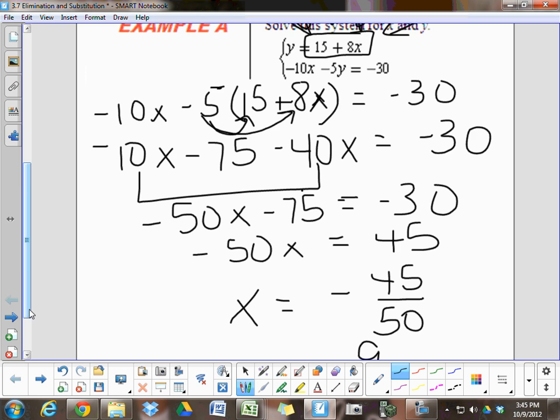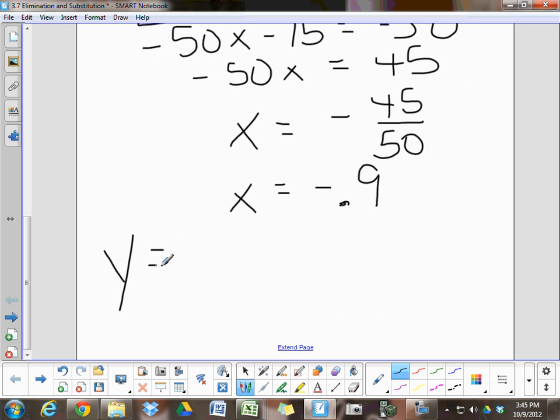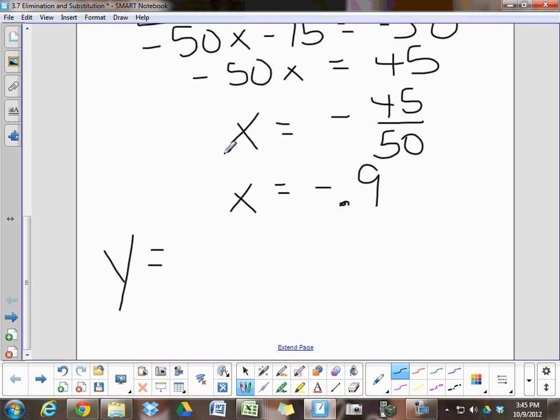You're going to plug negative 0.9 in for that x to find y. So, y would equal 15 plus 8x. Instead of 15 plus 8x, it's going to be 15 plus 8 times negative 0.9.